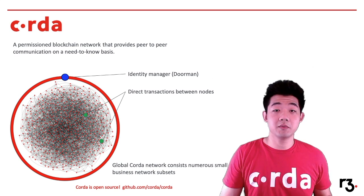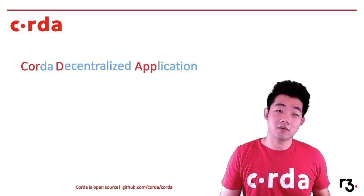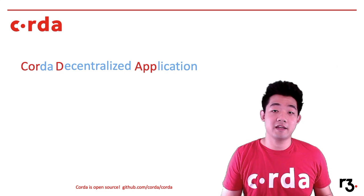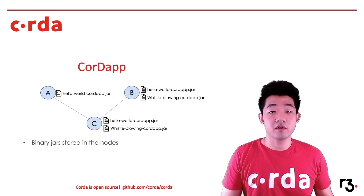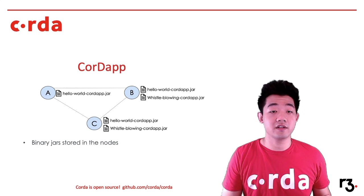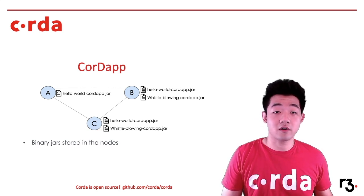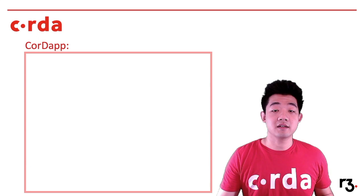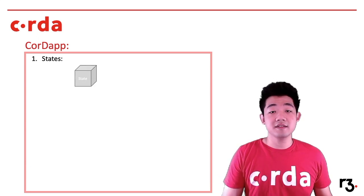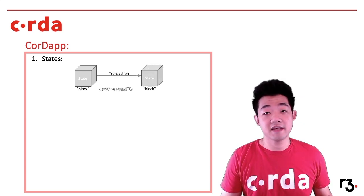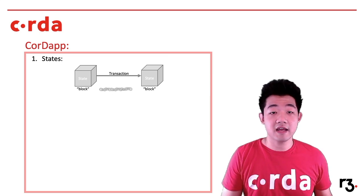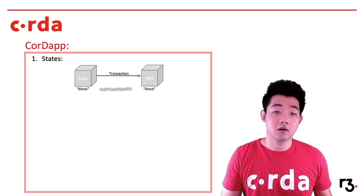Now that we are done with the overview, let's talk about smart contracts on Corda. A Corda decentralized application is generally referred to as a Corda app. Corda apps are binary jars that are stored inside of Corda nodes, and each node can carry multiple Corda apps with respect to different business logic or networks that the nodes are in. Inside of each Corda app, it consists of three types of objects. The first type is the state object. States are blocks in the Corda system, and these state objects are chained up via transactions. So after each transaction, the state object will be either consumed or updated.